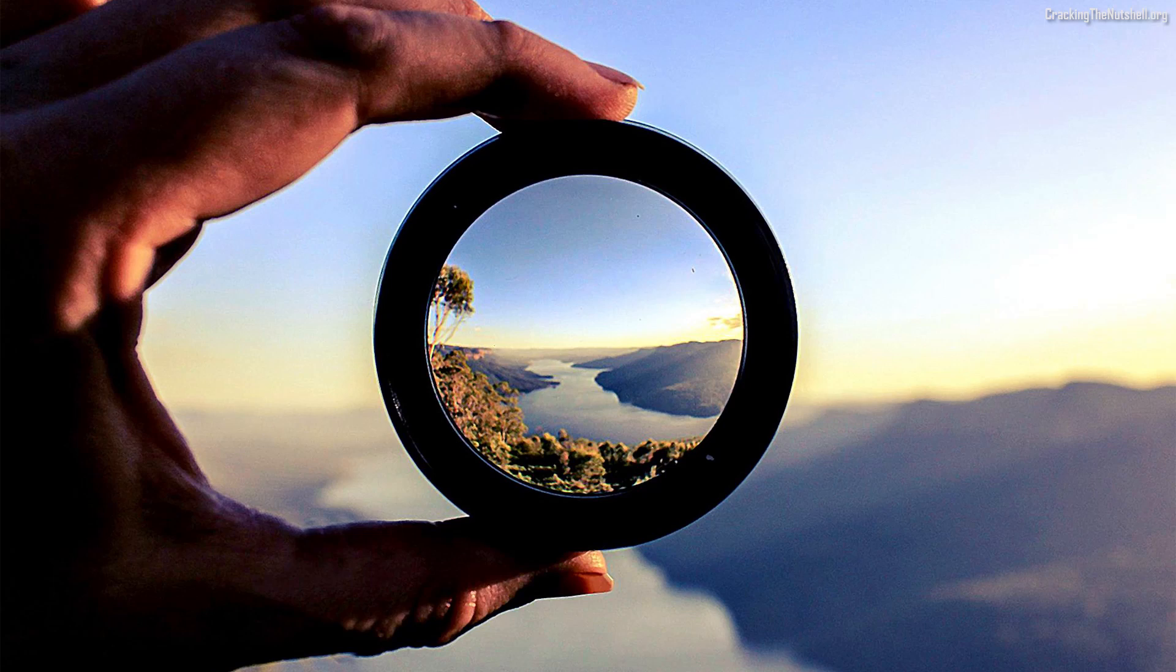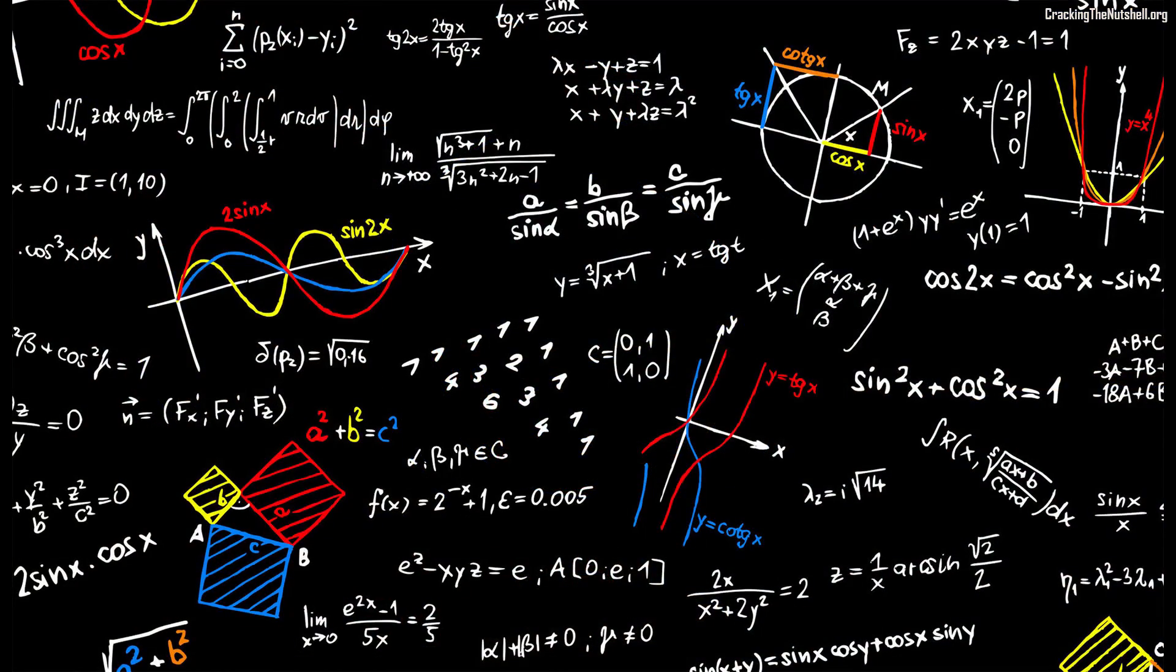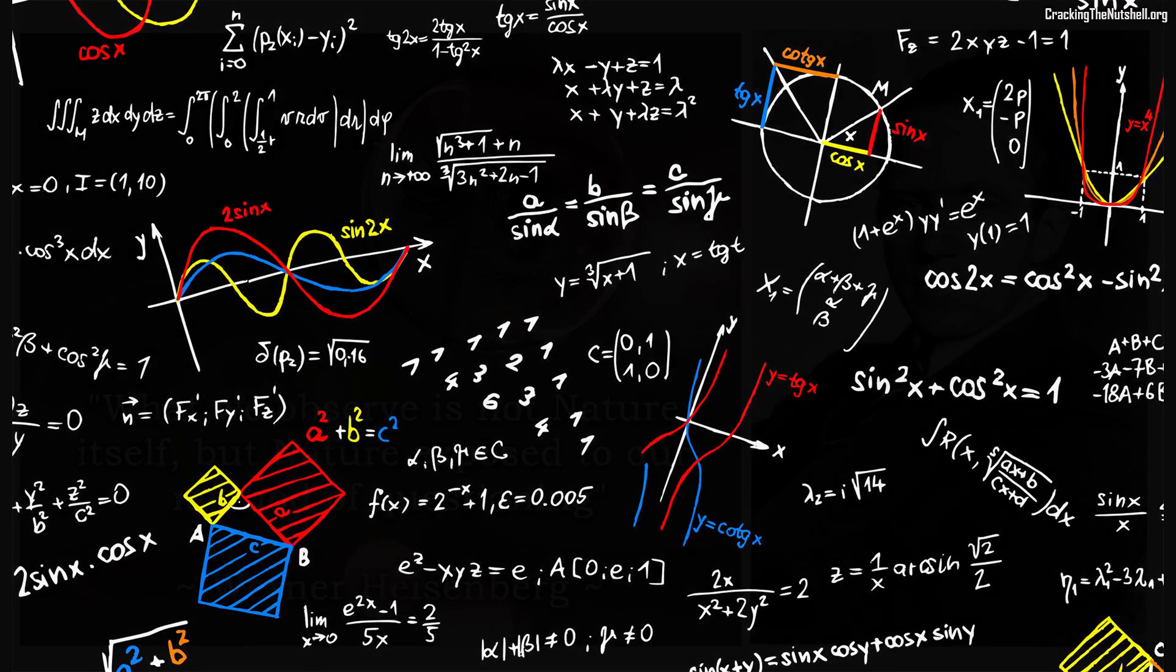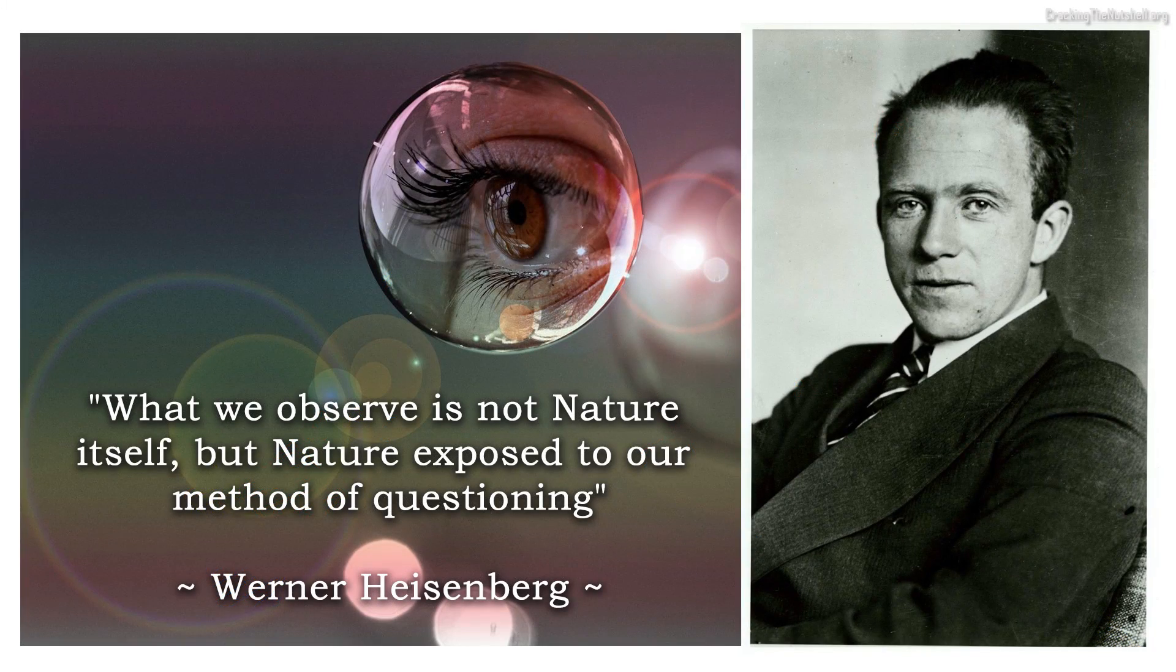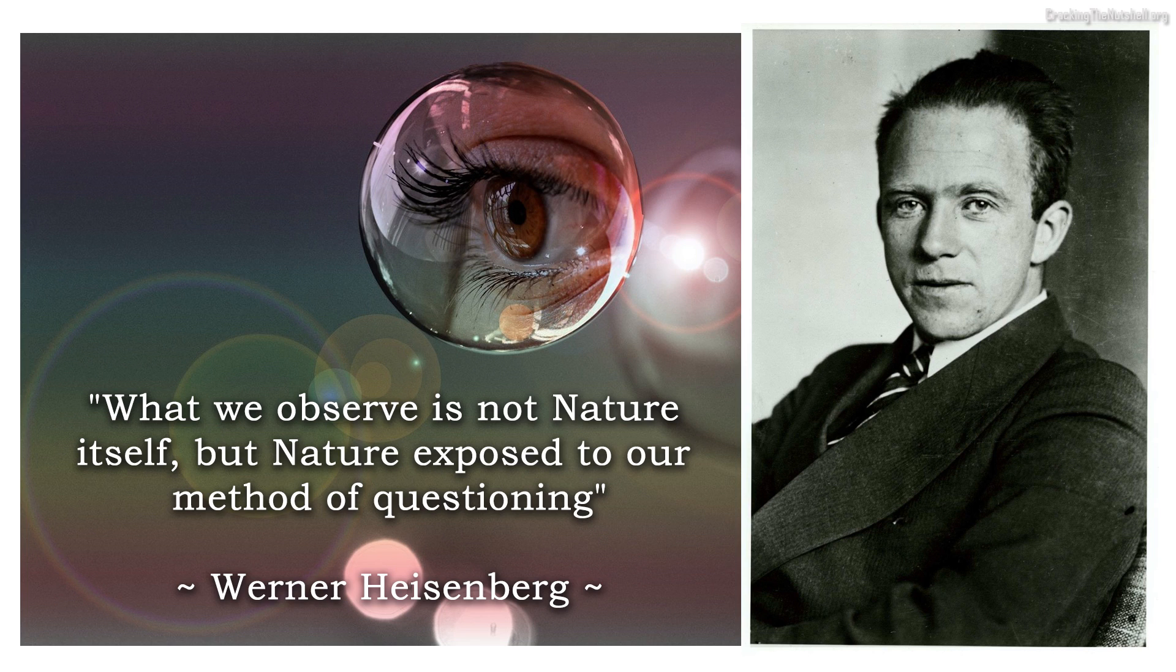Could it be that the reason these questions are so difficult to answer is that it may be meaningless to talk about the notion of reality itself, or about the independent existence of objects in any sort of absolute sense? Perhaps all we can talk about is our own perceptual interfaces, our own conceptual constructs, and our own mathematical models of the world. As Werner Heisenberg himself very wisely said, what we observe is not nature itself, but nature exposed to our method of questioning.